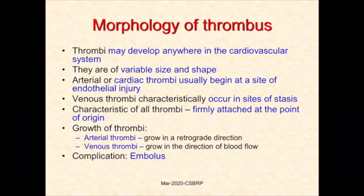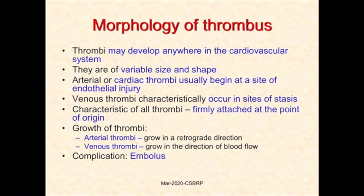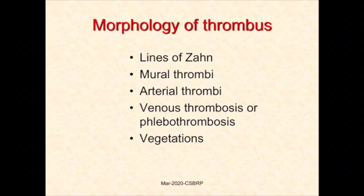Regarding the morphology of thrombus: thrombi may develop anywhere in the cardiovascular system and are of variable sizes and shapes. Arterial or cardiac thrombi usually begin at the site of endothelial injury, while venous thrombi characteristically occur at sites of stasis. The characteristic feature of a thrombus is firm attachment to its point of origin. An arterial thrombus grows in a retrograde direction, whereas venous thrombi grow in the direction of blood flow. Complications of thrombus include embolism. Morphological categories include lines of Zahn, mural thrombi, arterial thrombi, venous thrombosis, phlebothrombosis, and vegetations.